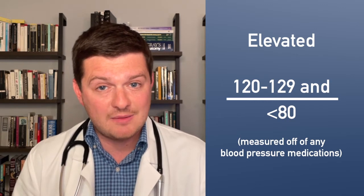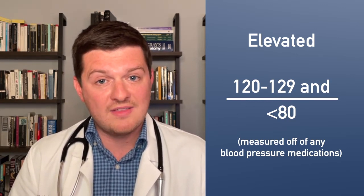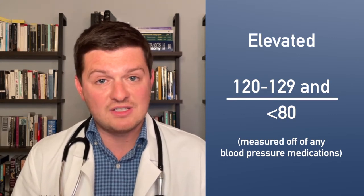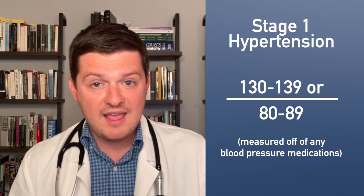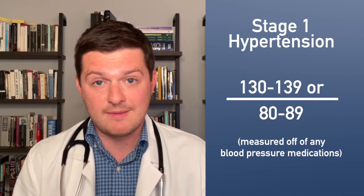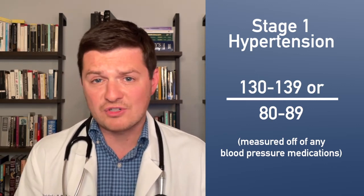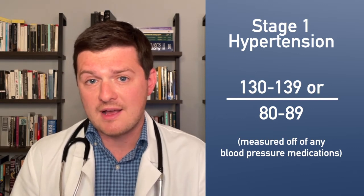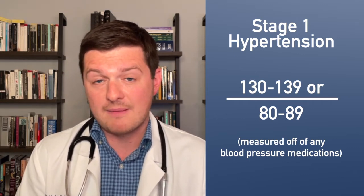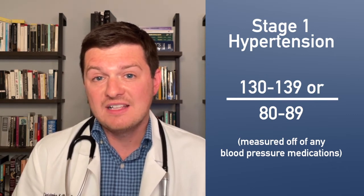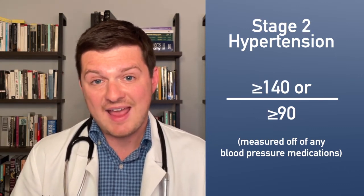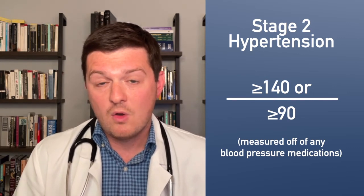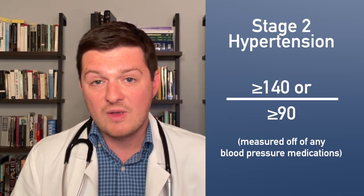When you get higher than that, you are in the hypertension range. Hypertension is divided into two stages. Stage 1 hypertension is a systolic blood pressure between 130 and 139, or a diastolic blood pressure between 80 and 89. So if your top number averages 130 to 139, or your bottom number is between 80 and 89, you have stage 1 hypertension. Stage 2 hypertension occurs when the top number is above 140 or the bottom number is above 90.